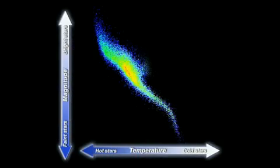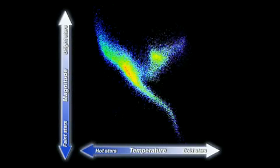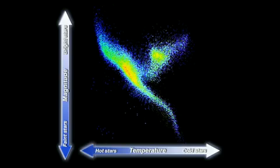A main sequence star has reached a stable hydrostatic equilibrium state. Our Sun is a good example, and sits here on the main sequence. There is a definite grouping in the top right of the diagram where we find giant stars, with white dwarf stars grouped on the bottom left.